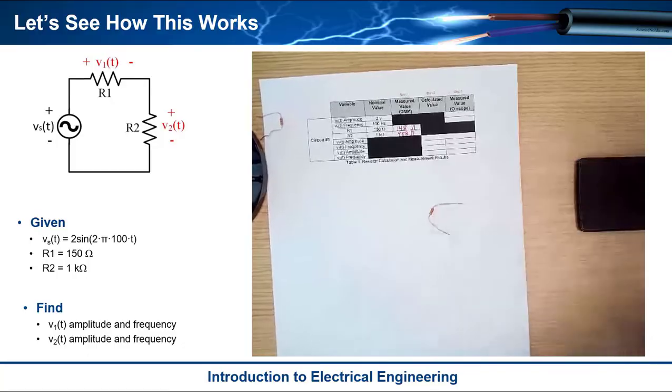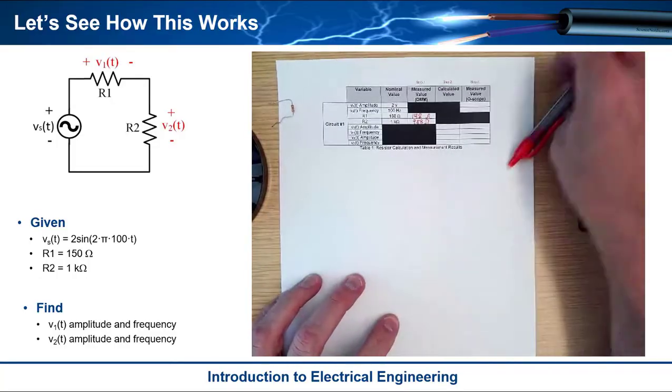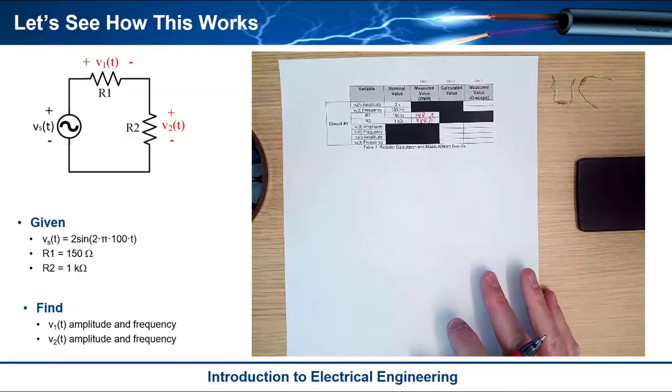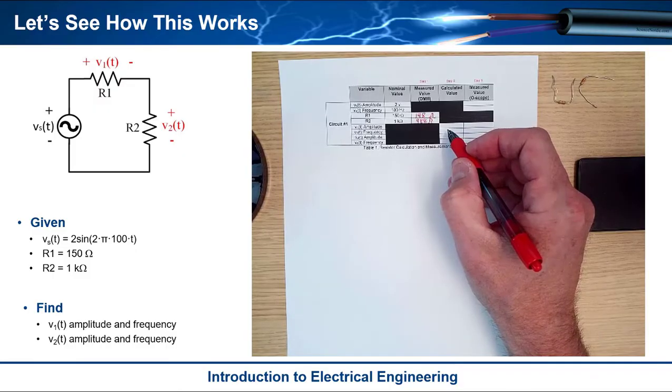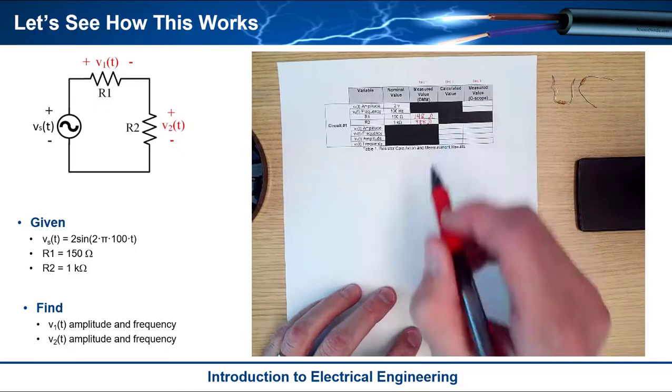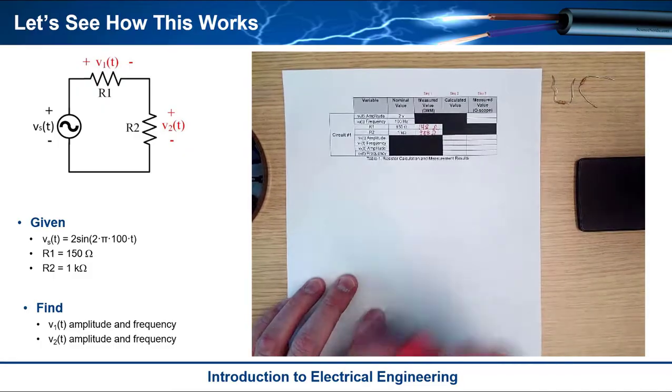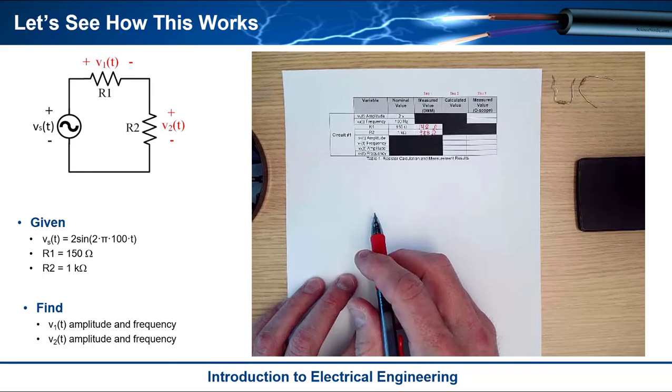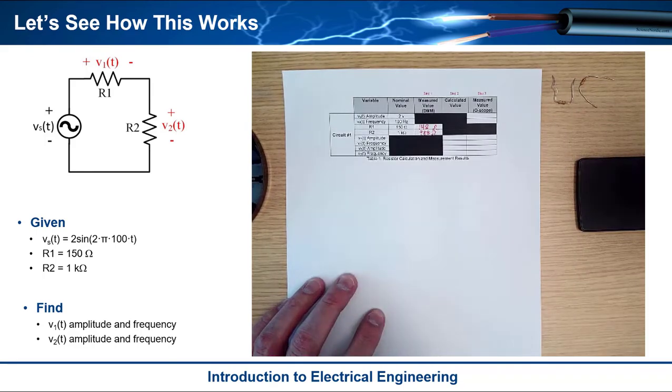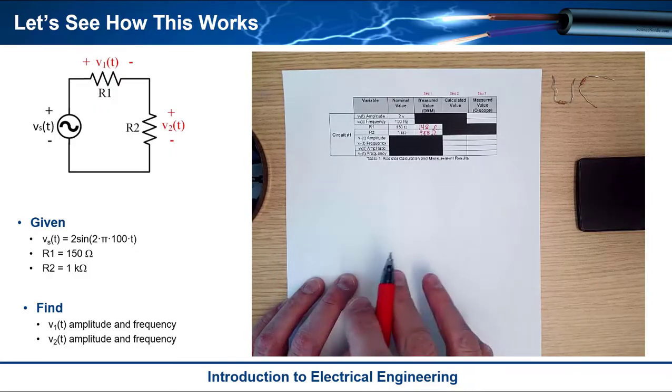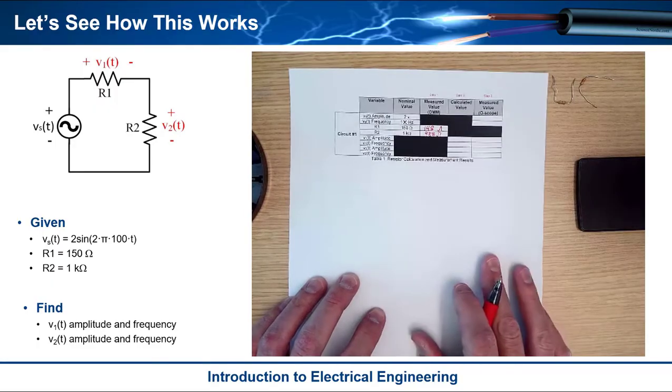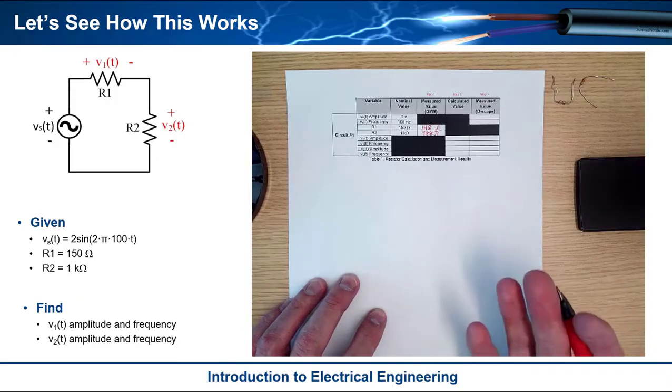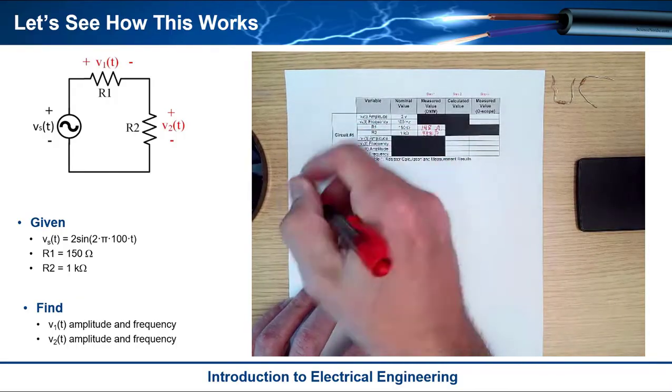Then I'm going to measure my 1K. I get 988 ohms. Now what I want to do is go ahead and do some calculations. I have my resistors and I'll put those to the side. If I look at what I can do to calculate V1, I'm going to use a voltage divider expression. That's a very simple way to get V1 immediately.